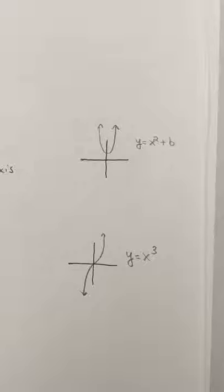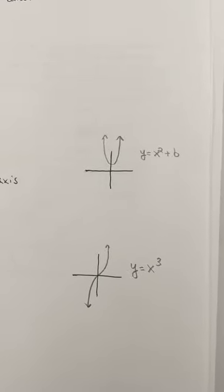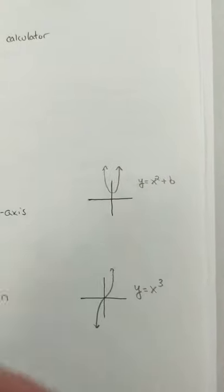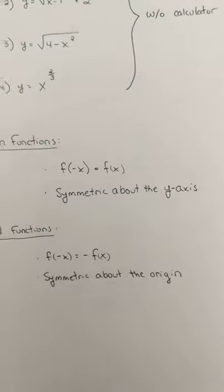An example of that would be this parabola, y equals x squared plus b, b being some y-intercept. And if I were to flip it over the y-axis, it would still be the same image.